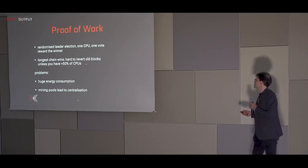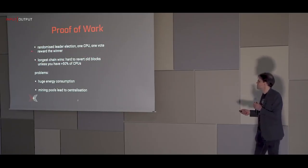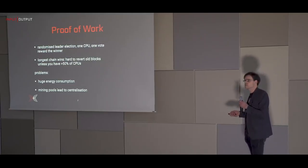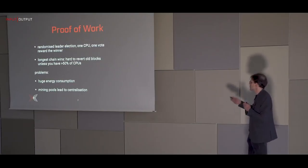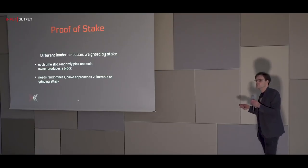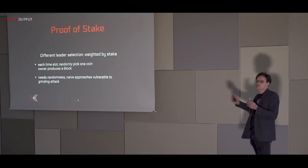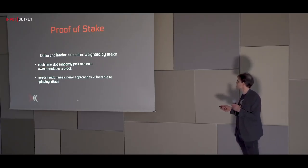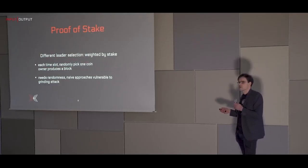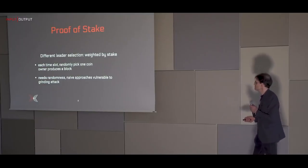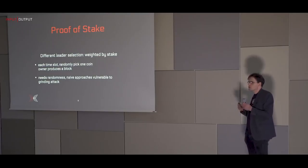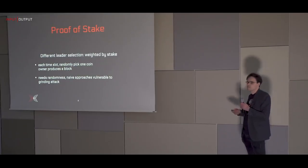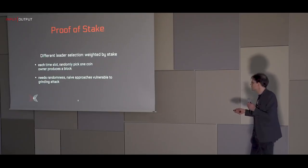Can we find another scarce resource to prevent Sybil attacks that is less energy-intensive and doesn't lead to centralization? Since we have a cryptocurrency, the currency itself is a scarce resource — there's a limited supply of coins. We can randomly pick one coin, and the owner of that coin gets to write the next block. To have a higher chance of being elected you'd have to buy more currency, which gets increasingly expensive, just like buying server farms.